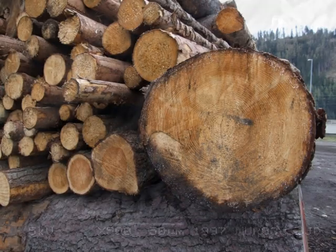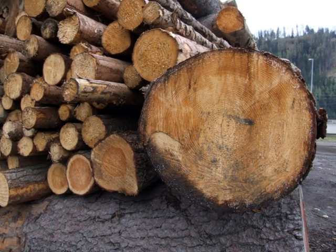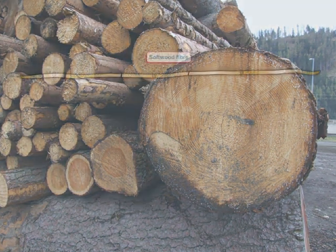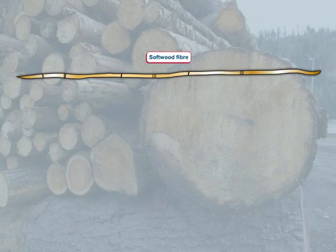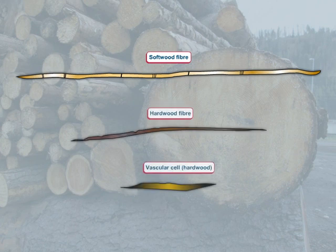Besides a difference in fibre length and thickness, there are other differences between hardwood and softwood. Most softwoods have resin ducts that are filled with resin. The paper industry cannot use resin. Hardwood has so-called vascular cells, which take care of the movement of water for the tree.